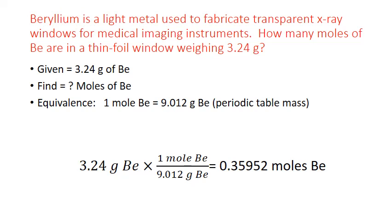So remember sig figs at this point. The numbers in our conversion factors are considered exact numbers, so they don't influence the number of significant figures we round to in our final answer. The only measurement is the starting number. So we just have to look at our starting number to figure out the number of significant figures that we should round our final answer to. So 3.24 has three digits and they are all considered significant because they're all non-zeros. And that means that we round our final answer to three significant figures. We start with the first non-zero on the left. So 0.3595 will round up to 0.360 moles of beryllium.